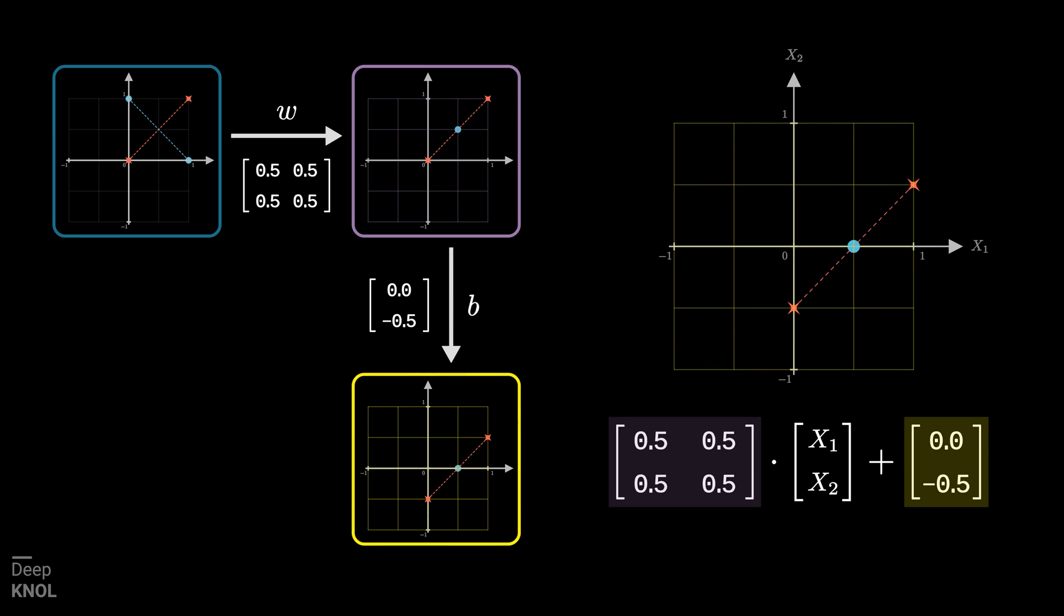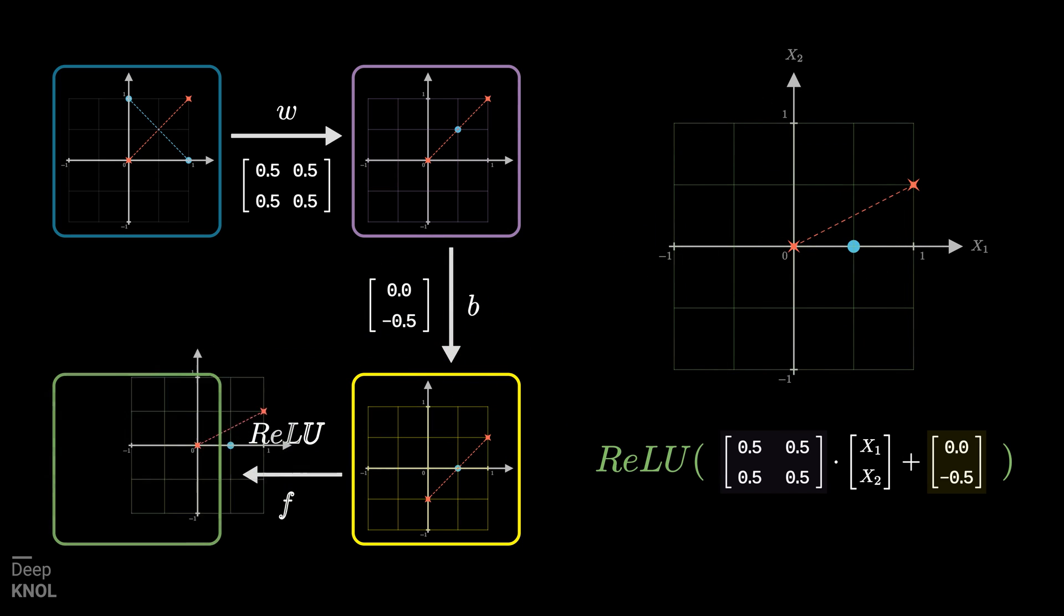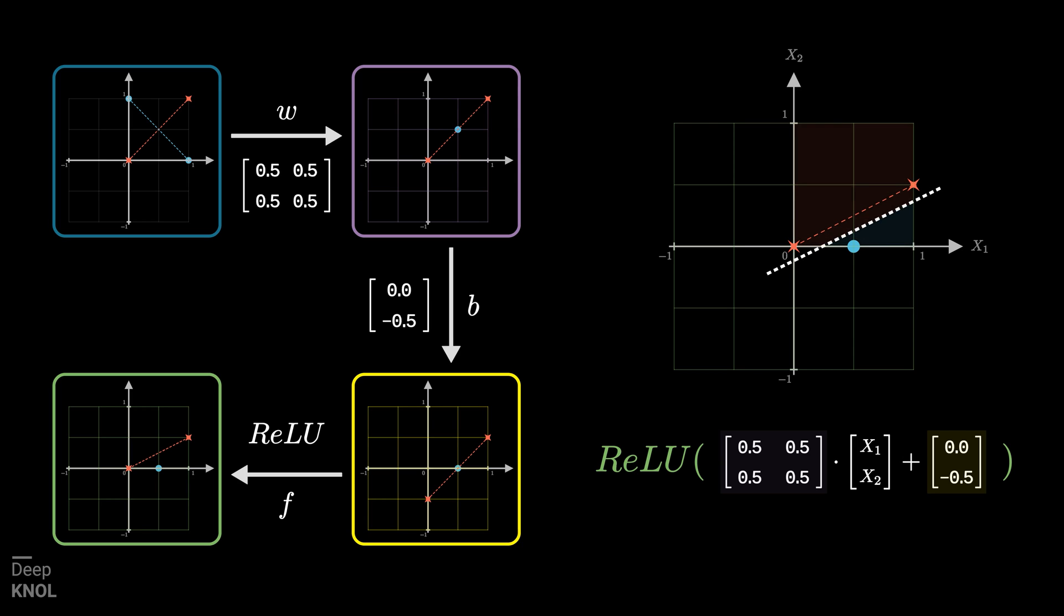At this stage, if we apply ReLU, all negative values of x1 or x2 map to 0. And guess what? Now you may notice that there exists a line in this plane which can linearly separate the red cross and the blue dots. That's the magic that non-linearity like ReLU brings to the picture.